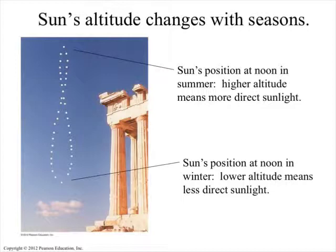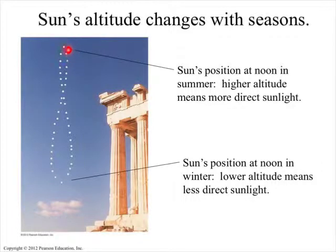Throughout the year, as we approach our winter solstice, the sun gets lower and lower in the daytime sky at noon. At the summer solstice, it's very high in the sky. This is due to the Earth's tilted axis of rotation and the sun following the ecliptic.